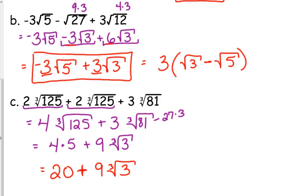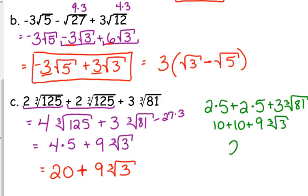You could have also done this from the beginning, and you could have said, well, the cube root of 125 is 5. And gotten 10 plus 10 plus 9 cube roots of 3. It still gives you 20 plus 9 cube roots of 3.